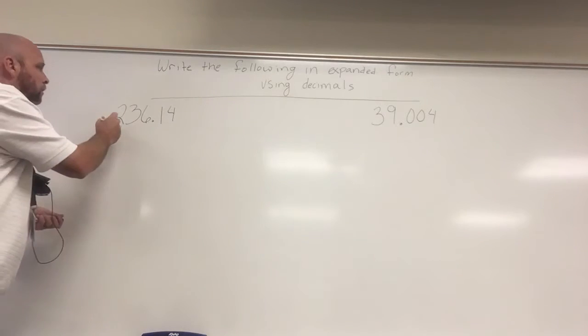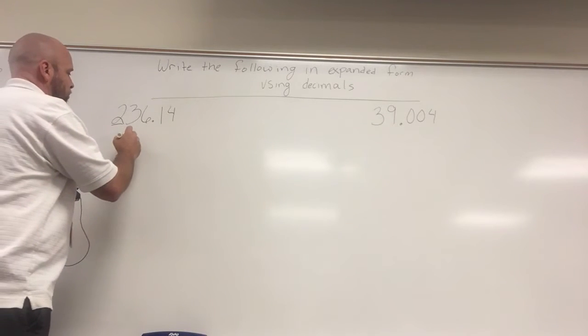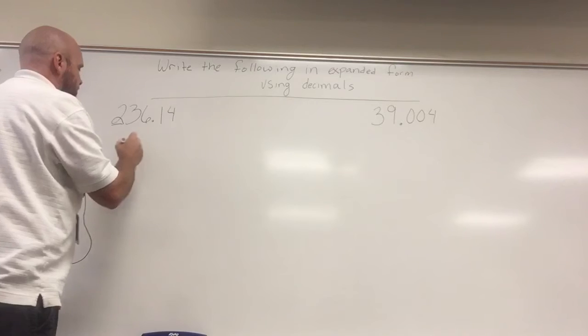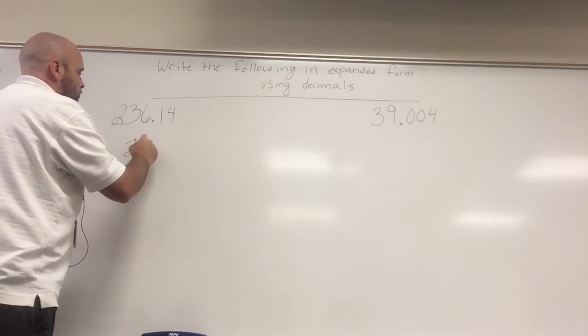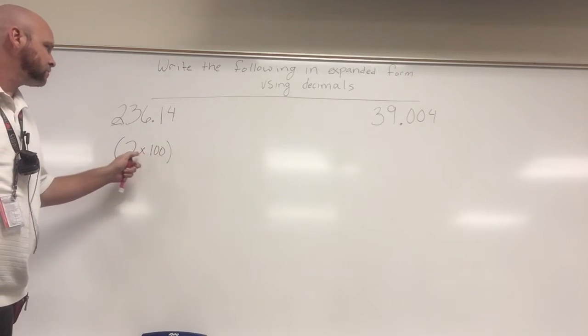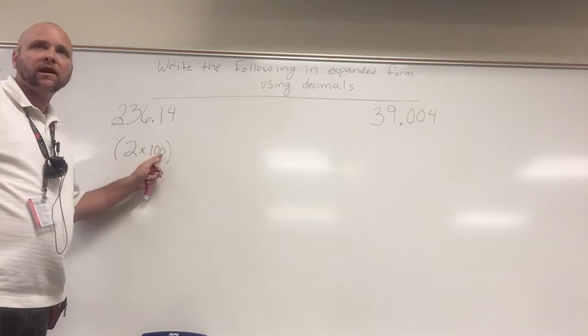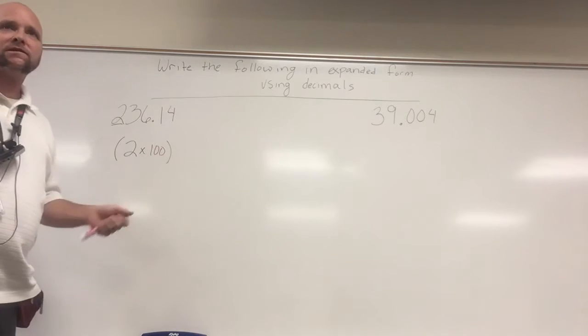Simone, the two is in what place? The hundreds place. So if I'm going to do this and it says writing in the decimal forms, so I've got two times 100. Is this still in decimal form? Yes, because even though they're not written, this two's in the ones place. This is 100 ones, which is the same as 100.